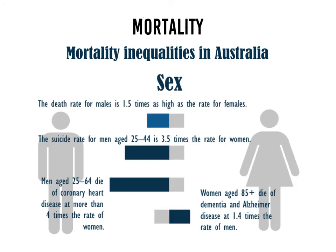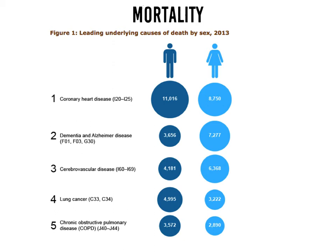Regarding mortality inequality in Australia: more males die than females, the suicide rate is higher for men than women, and many more men die of coronary heart disease than women. On the other hand, more women are dying of dementia and Alzheimer's disease than men. A chart comparing the five leading causes of death by sex shows that coronary heart disease clearly affects more men, while Alzheimer's and dementia, cerebrovascular disease or stroke, affect more women. Lung cancer and chronic obstructive pulmonary disease affect more men than women.